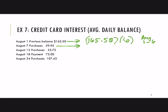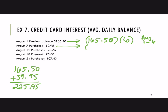Then on the 7th, we need to know what the new balance is. We have $165.50 and add in the purchase of $59.95, giving us $225.45. That's the new balance on August 7th, and it's carried from August 7th through the 11th — so that's five days — and then it changes on the 12th.